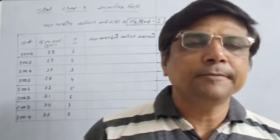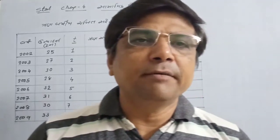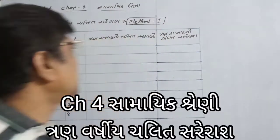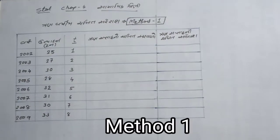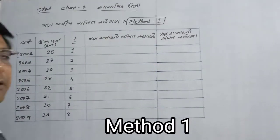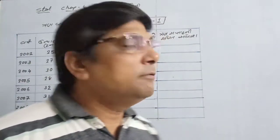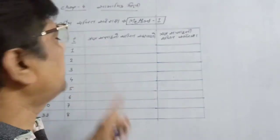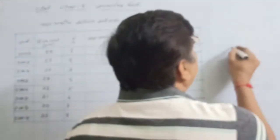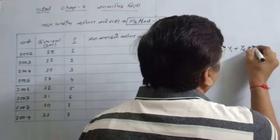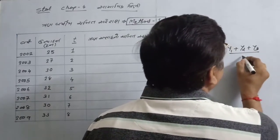My friends and students, chapter number four in statistics. We are going to have three years, four years, five years, and four years. The first year we have three years, so we take y1 plus y2 plus y3 divided by 3.